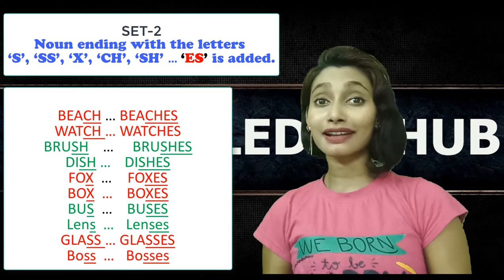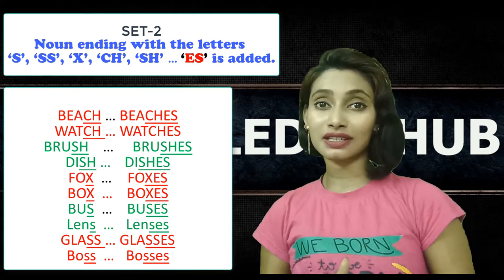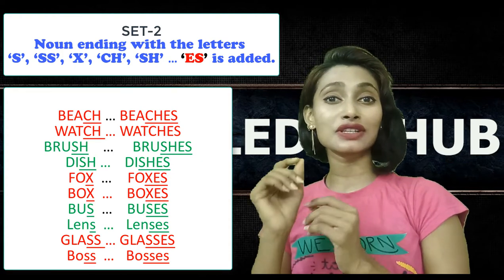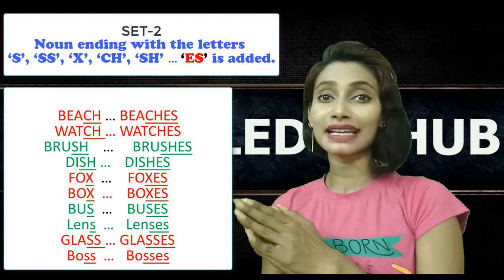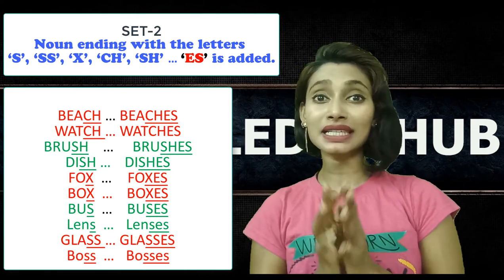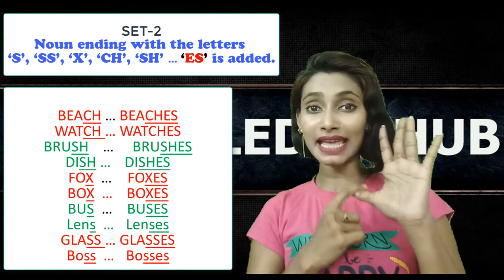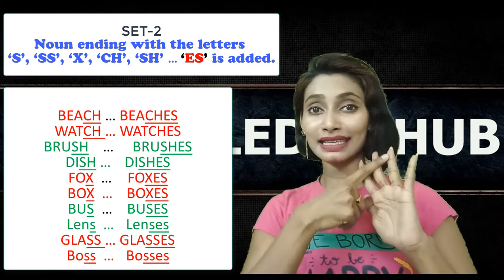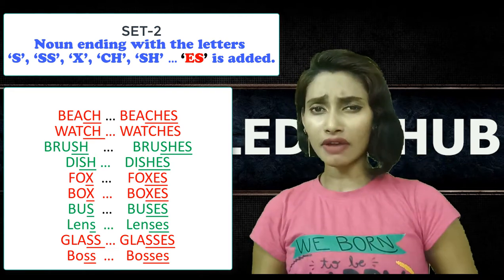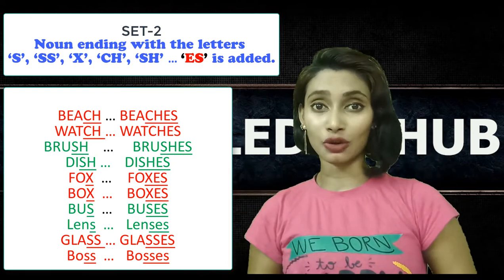Glass, glasses; boss, bosses — these two nouns end with SS and we added ES to make plural forms. So this is set 2, with words ending in S, SS, CH, SH, and X. However, there is an exception to this rule. There are some words that though end in these letters do not take ES.